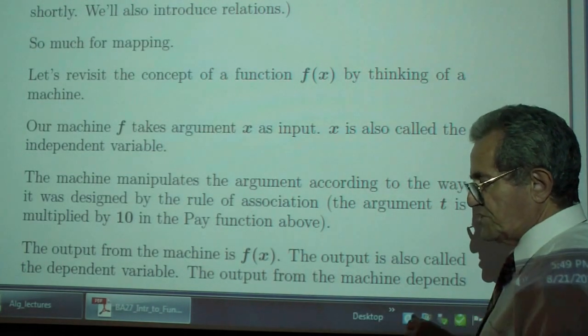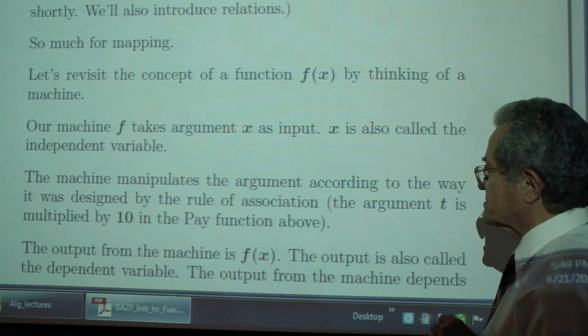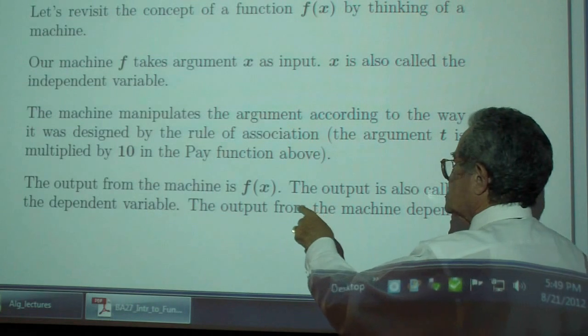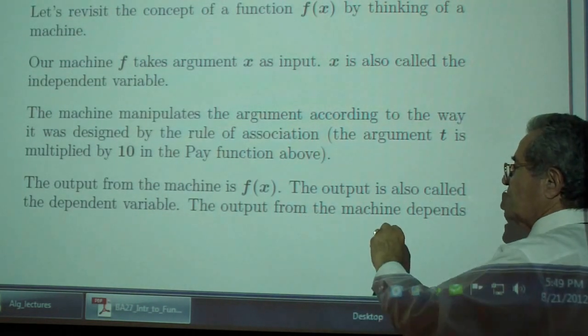So the machine takes the input, the X, multiplies by 10, spits out 10 times X. The output of the machine is F of X. The output is also called the dependent variable.